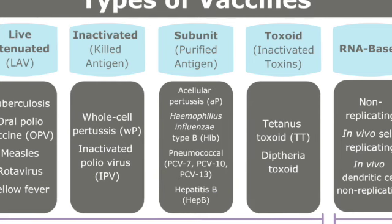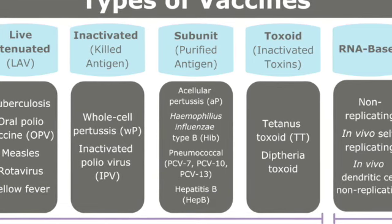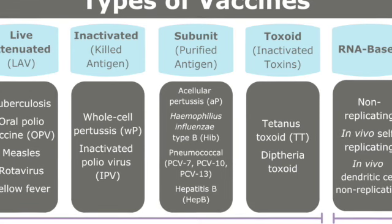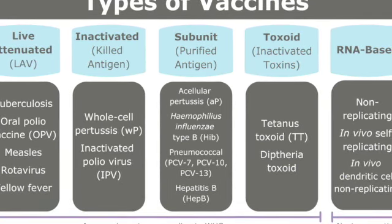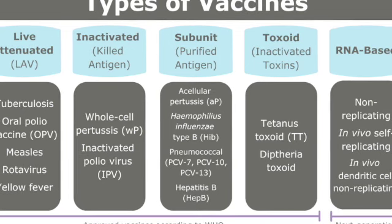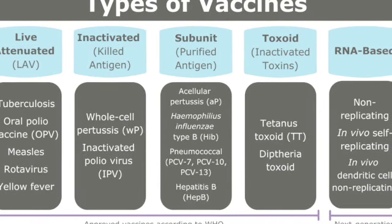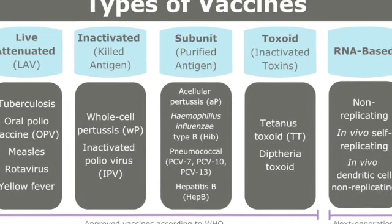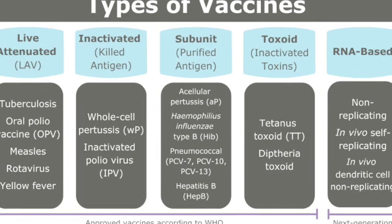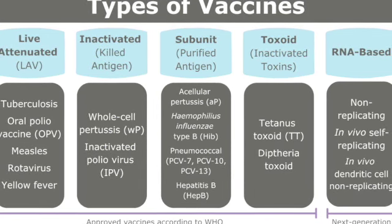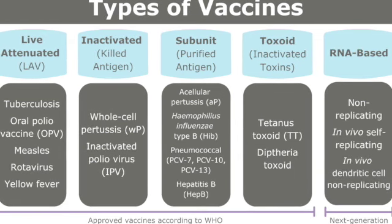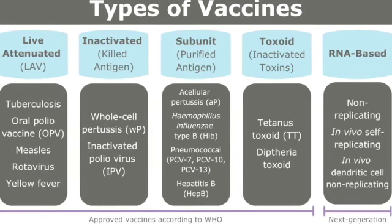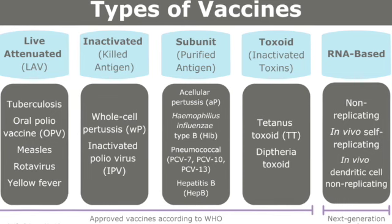There are several different types of vaccines. Each type is designed to teach your immune system how to fight off certain kinds of germs and the serious diseases they cause. When scientists create vaccines, they consider how your immune system responds to the germ, who needs to be vaccinated against the germ, and the best technology or approach to create the vaccine. Based on a number of these factors, scientists decide which type of vaccine they will make.